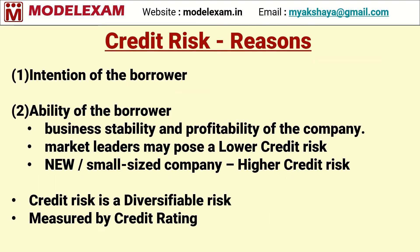Credit risk has two possible reasons. The first is the intention of the borrower — if a person borrows money with no intention of repaying, we cannot judge or do much about such a person. The second reason is the ability of the borrower — that is, the business stability and profitability of the company, which we can assess by studying their balance sheet, profit and loss account, market position, product acceptance, and other fundamentals. Market leaders and large companies pose lower credit risk compared to new or small-sized companies, which pose higher credit risk.